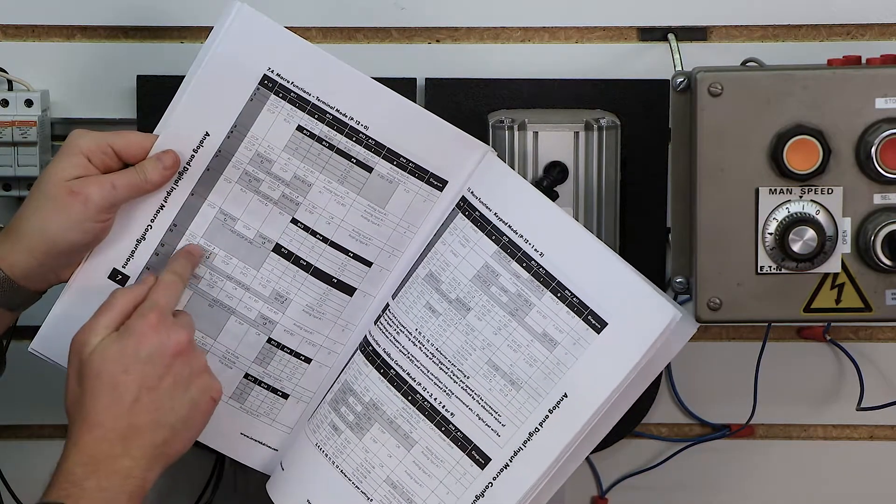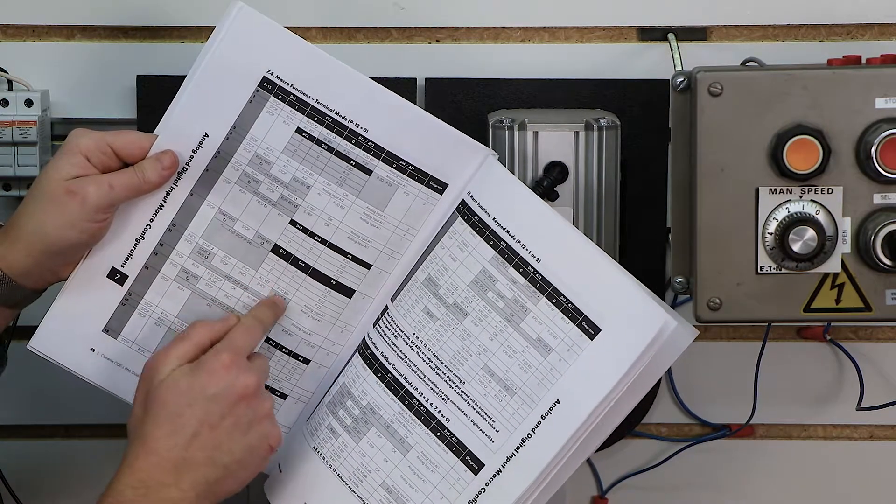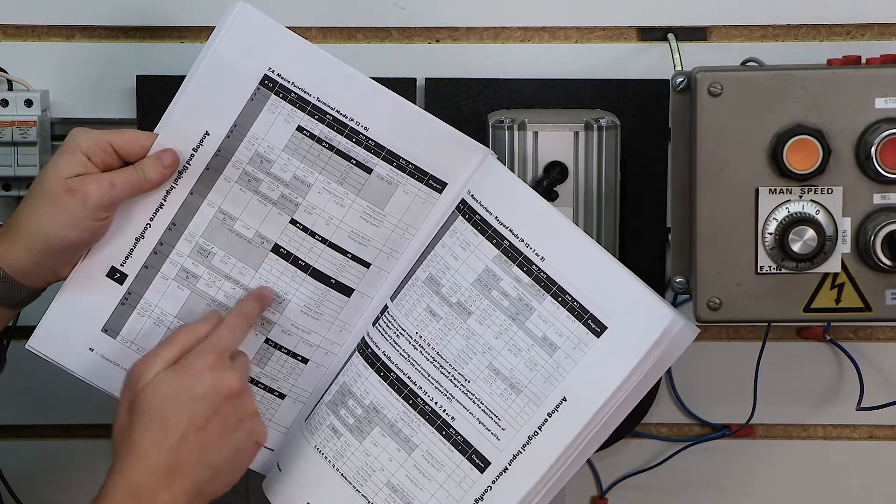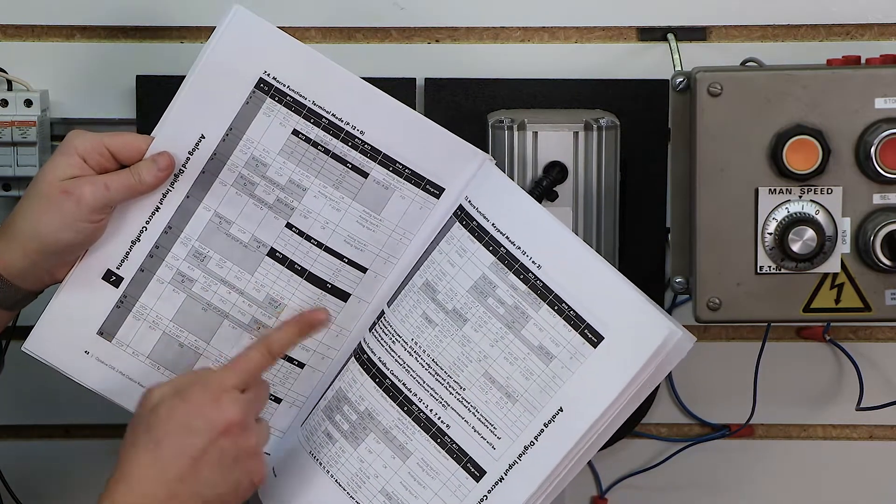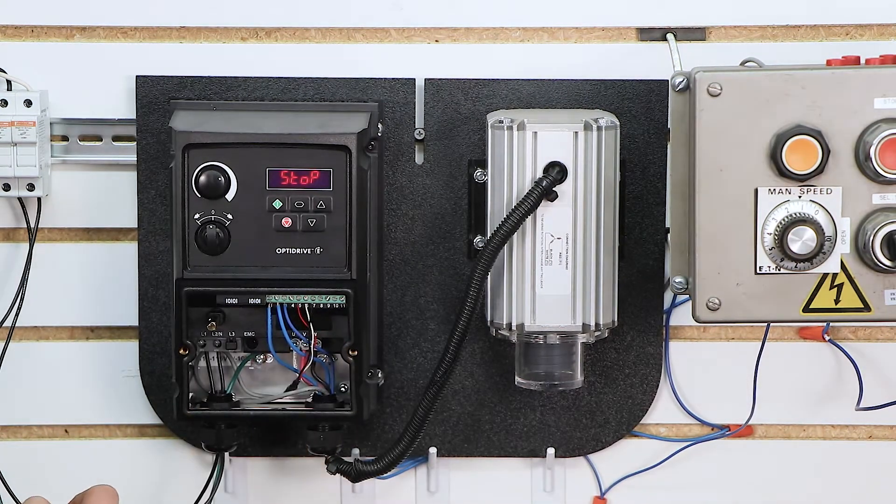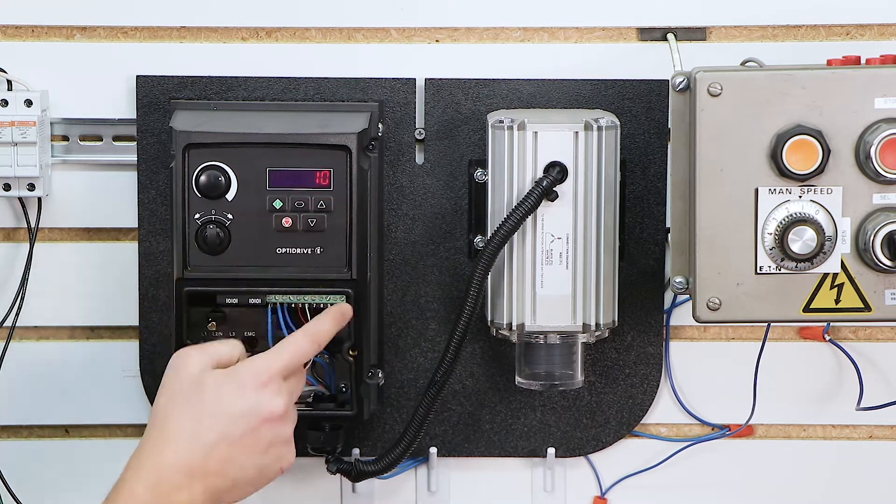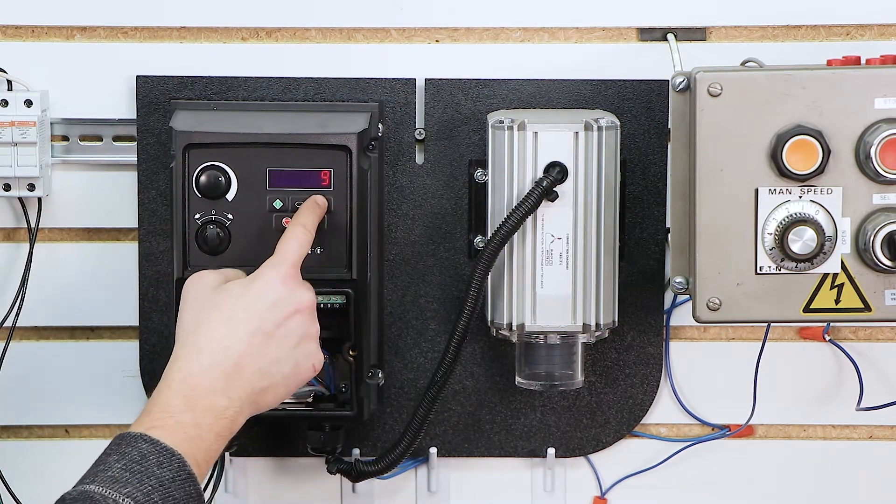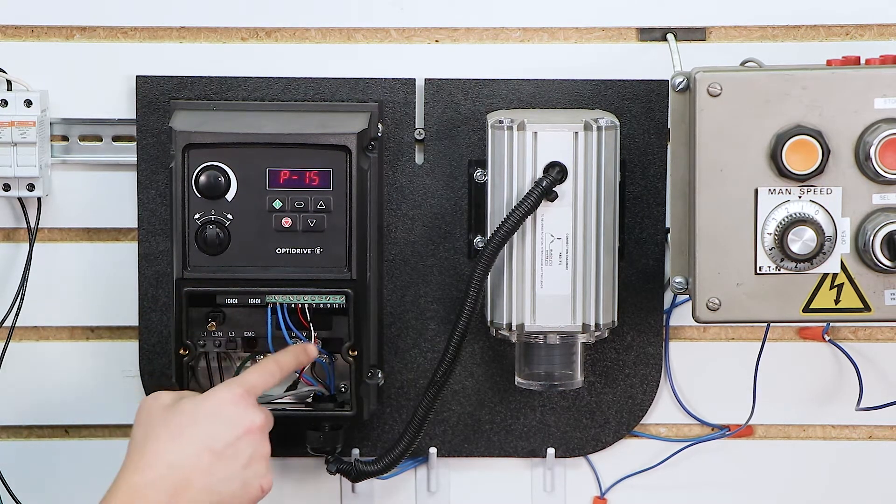So digital input 1 is going to be our start. Digital input 2 is going to be our stop. Digital input 3 is going to let us choose our speed reference. In this case, we're just going to leave it open, and it's going to default to analog input 1, which is what we wired these to. You'll see that here in a second. So let's go ahead and go to P15, select the menu again. I've already got it set to 10. You can scroll through these, and that sets up my programming for the digital inputs. Now let's get to the wiring.